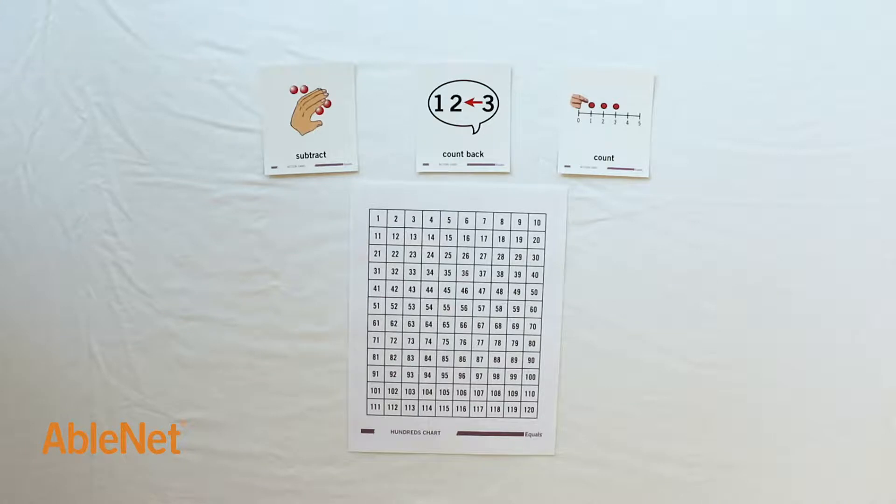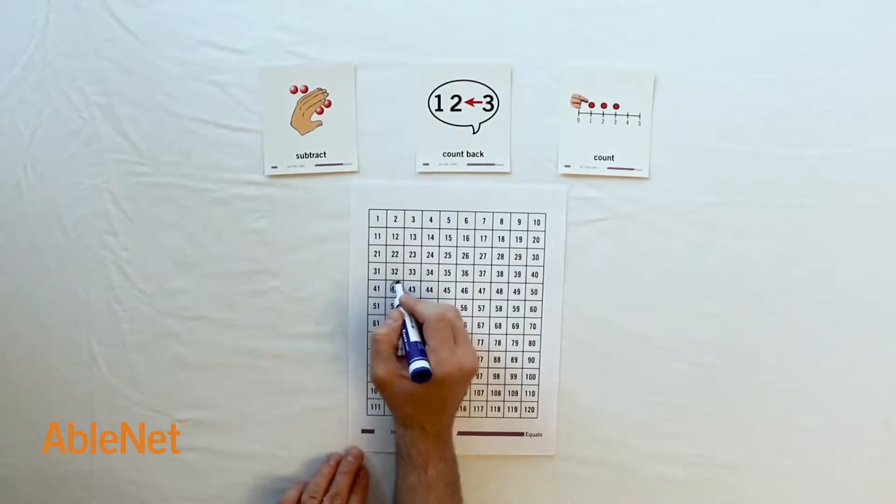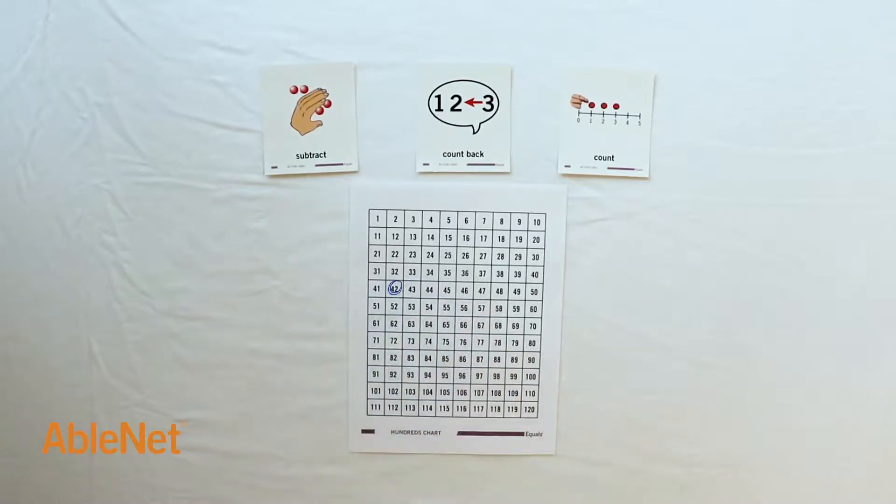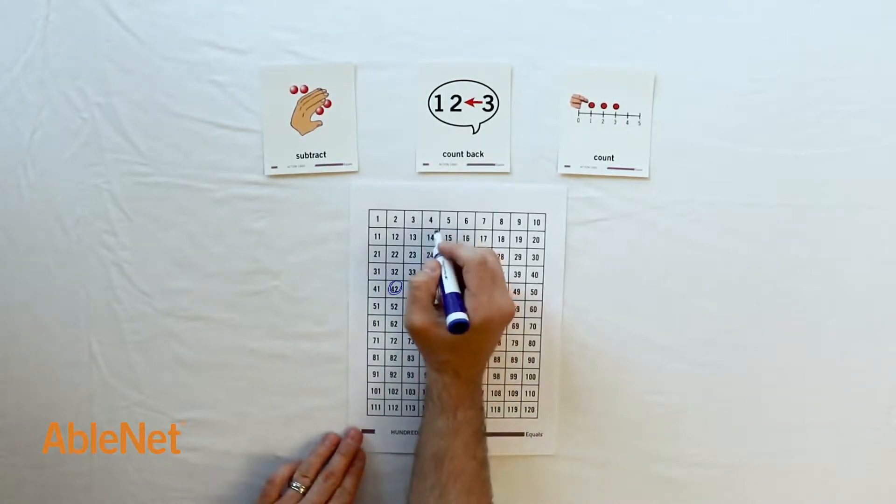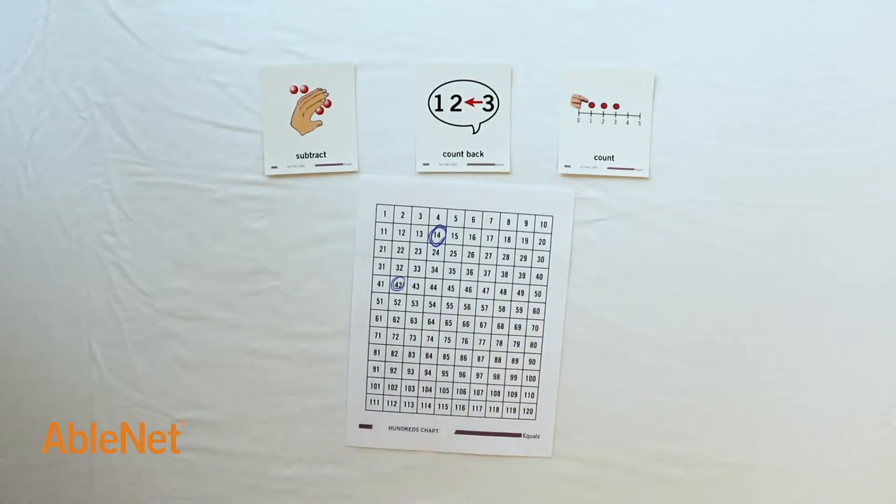Our start amount is 42, and the result is 14. I will mark those on the hundreds chart. Now that I have marked those, I can count back from the start to the result.